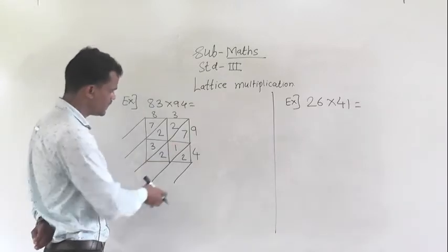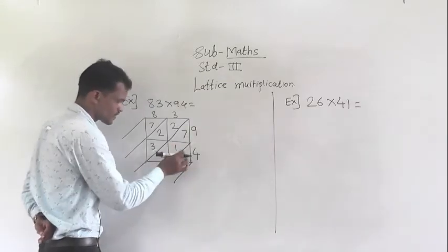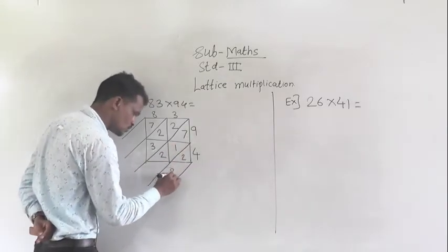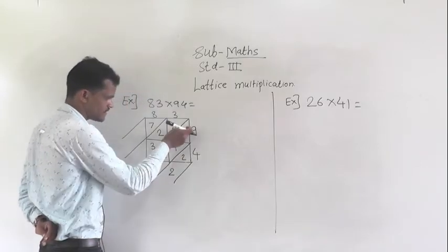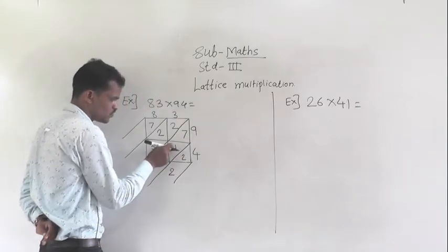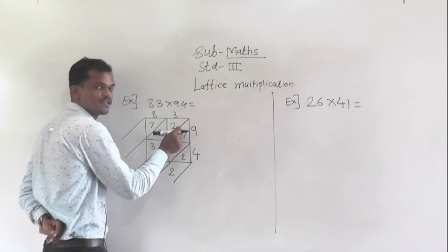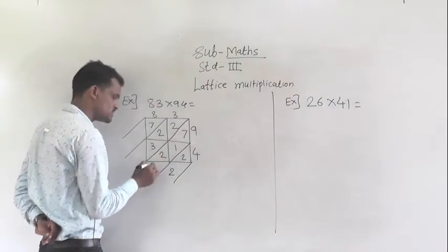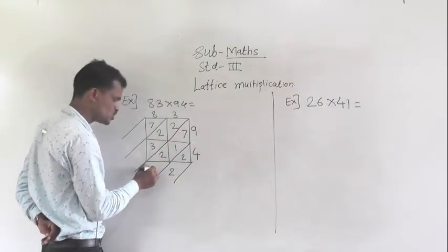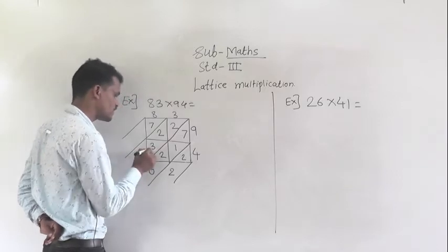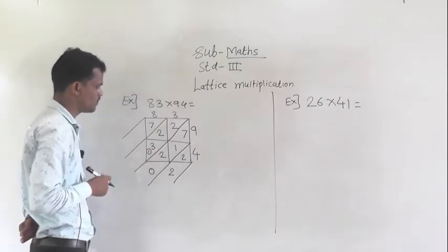Now add the columns. Here only 2 is there, so write 2 right here. Then add this column: 2 plus 1 is 3, 3 plus 7 is 10. So 10 means write 0 right here and 1 carry to the next column.